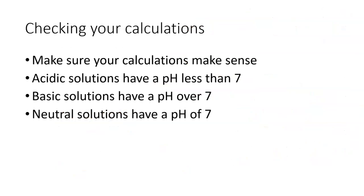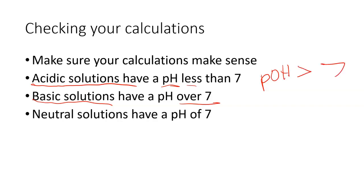To double-check yourself, make sure your calculations make sense. If you have an acidic solution, your pH should be less than 7 — if you get a pH of something like 3 million, that's a clue that something has gone terribly wrong. If you have a basic solution, the pH should be over 7. If you have a neutral solution, your pH should be around 7. By the same token, for an acidic solution the pOH should be more than 7; for a basic solution, the pOH should be less than 7; and for a neutral solution, the pOH should also be around 7.